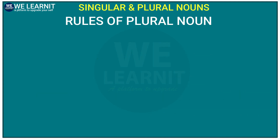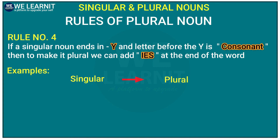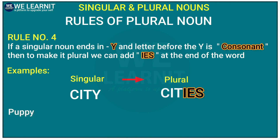Now, let's move to the fourth rule of plural nouns. If a singular noun ends in -y and the letter before the -y is a consonant, then to make it a plural noun, we add -ies. For example, 'city' ends with -y, and before the -y is the consonant 't'. So 'city' becomes 'cities' — we add -ies. Similarly, 'puppy' becomes 'puppies'.